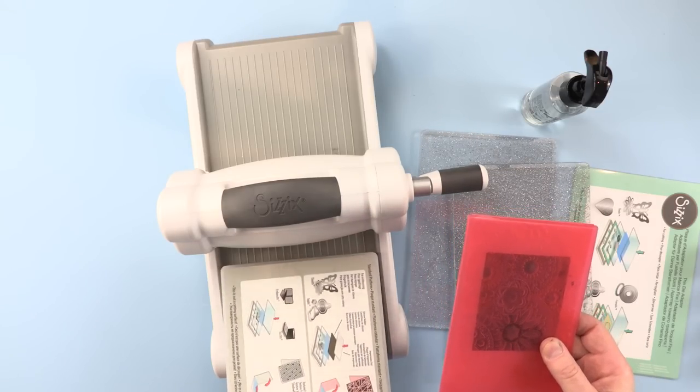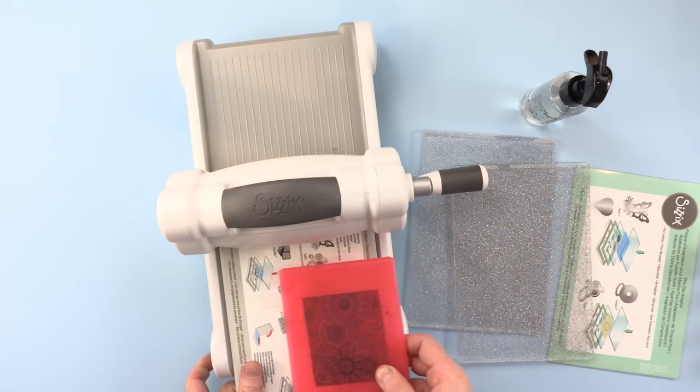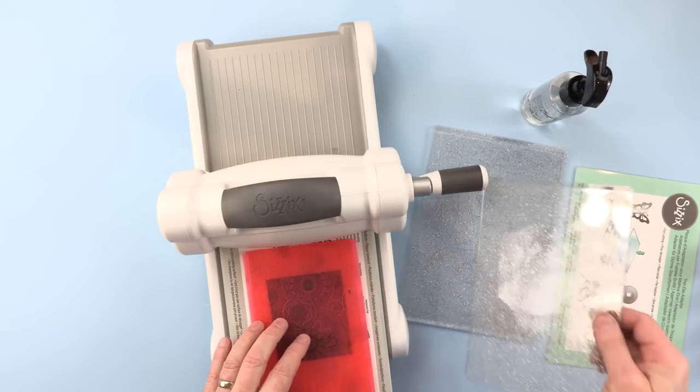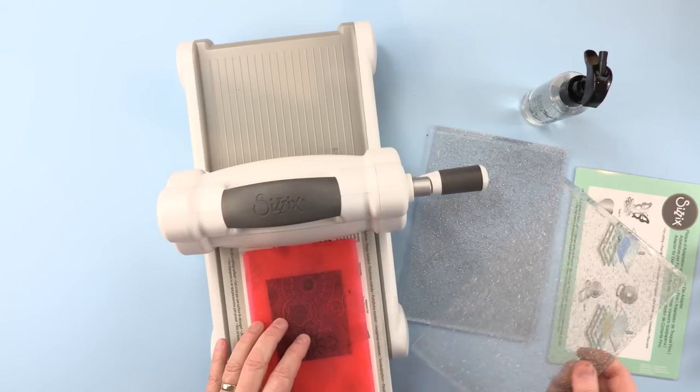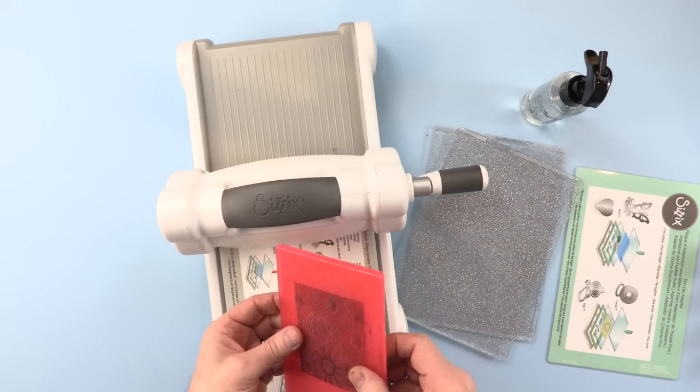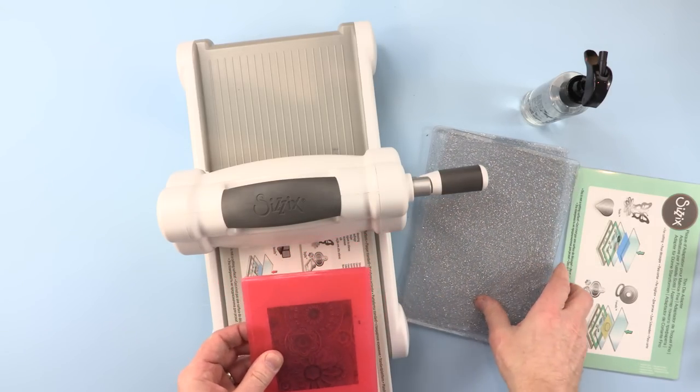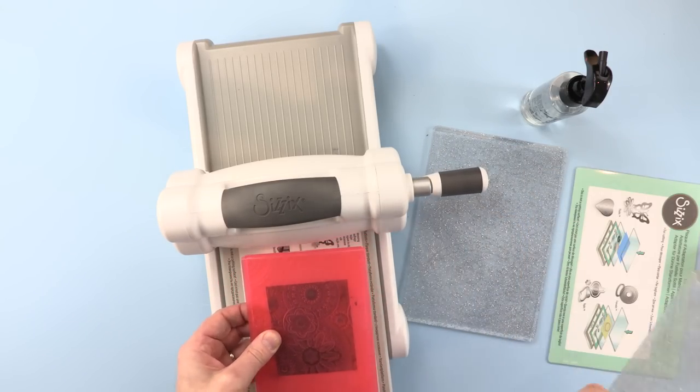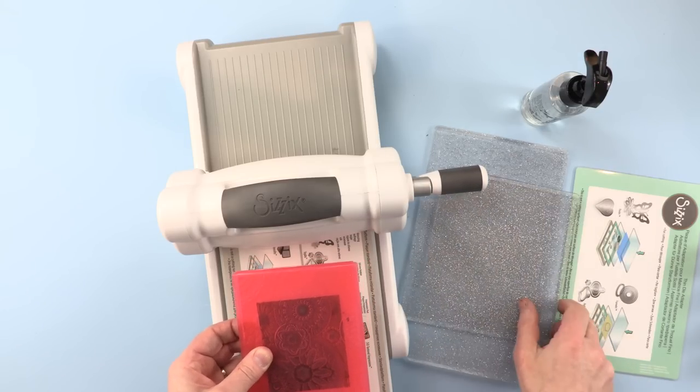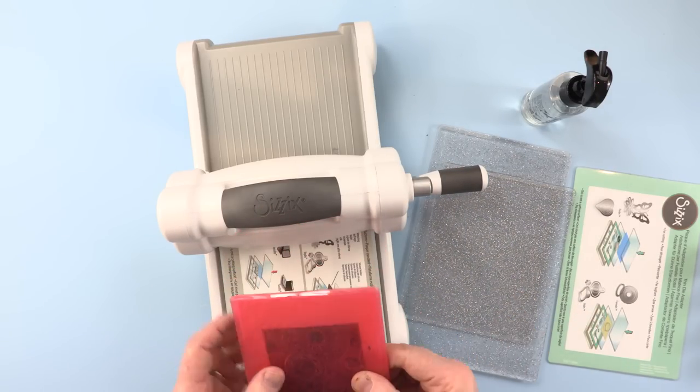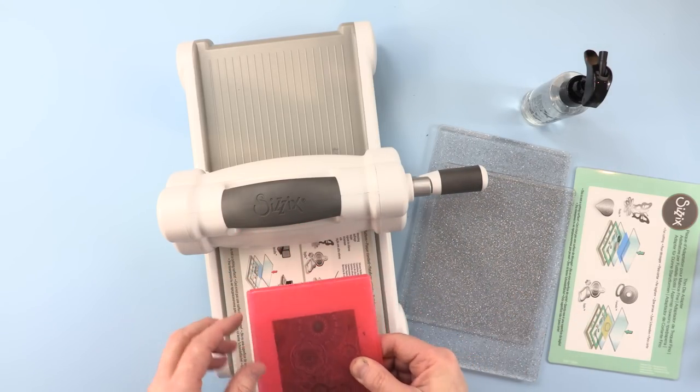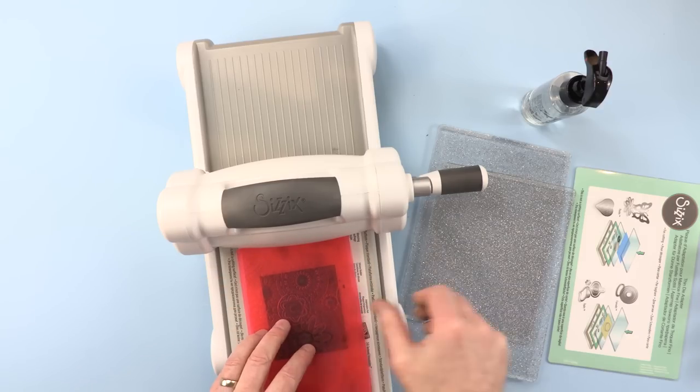Now using this, I'm using the bottom part of my platform in my Big Shot and just a single cutting mat. You only need one cutting mat when you're using these embossing folders. So this is where the hinge is and I'm going to have that towards the roller.